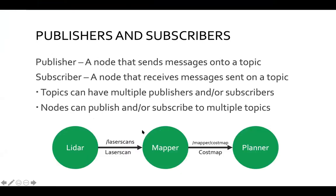How do we use these messages? Publisher and subscriber relationships. A publisher is a node that sends messages onto some topic; a subscriber is a node that receives messages sent on a topic. Topics can have multiple publishers or subscribers, and nodes can both publish and subscribe. This is how we build that graph and actually build those arrows out — for example, a LIDAR sensor communicating via a laser_scans topic to a mapper node, which then sends out cost maps to a planner, and so on.